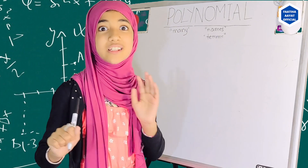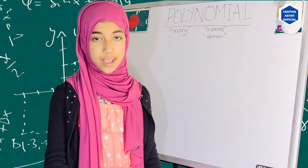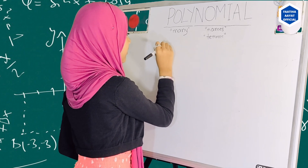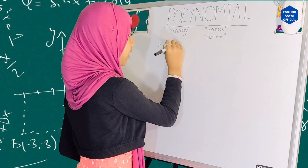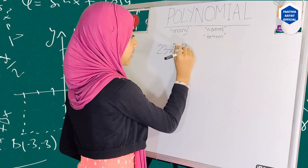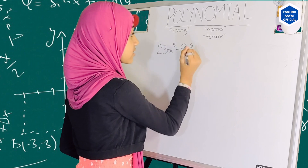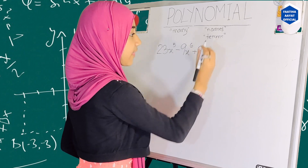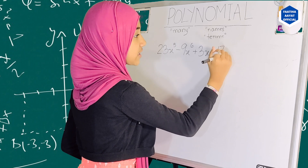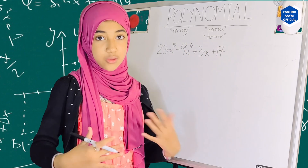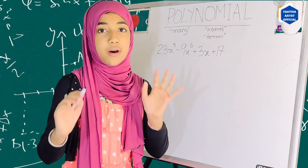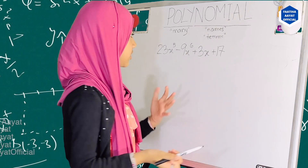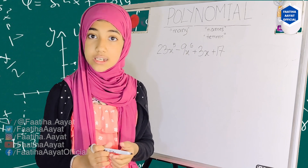Now let me show you what a real polynomial does look like. I'm going to write you an example. Let's say for example we have 23x to the power five, minus 9x to the power six, plus 3x, plus 17. Let's say this is our equation. This is actually a polynomial.